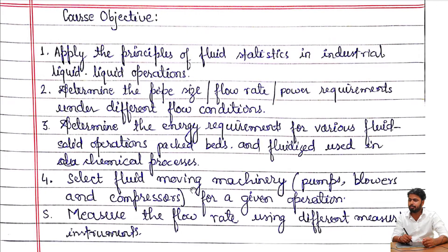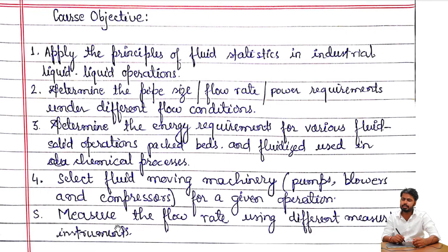The fourth objective is to select fluid moving machinery like pumps, blowers, and compressors for a given operation. The fifth is to measure the flow rate using different measuring instruments. These are the course objectives, and after finishing fluid mechanics, these will become the course outcomes — all these abilities you should have after studying the subject.